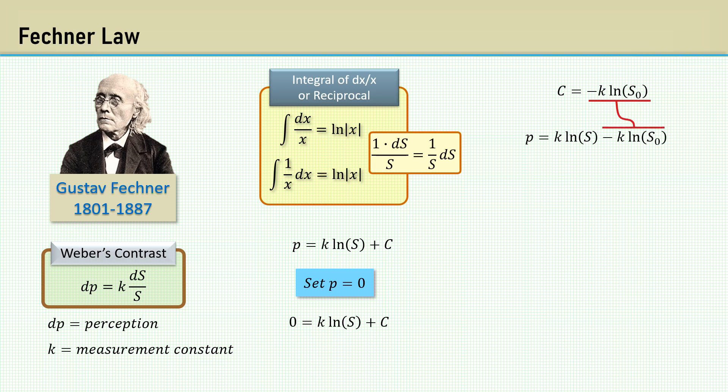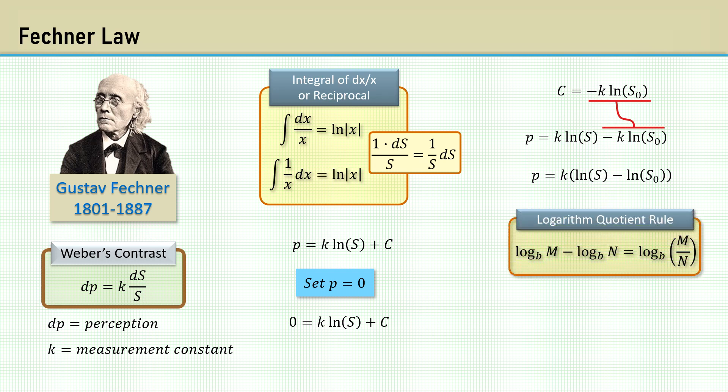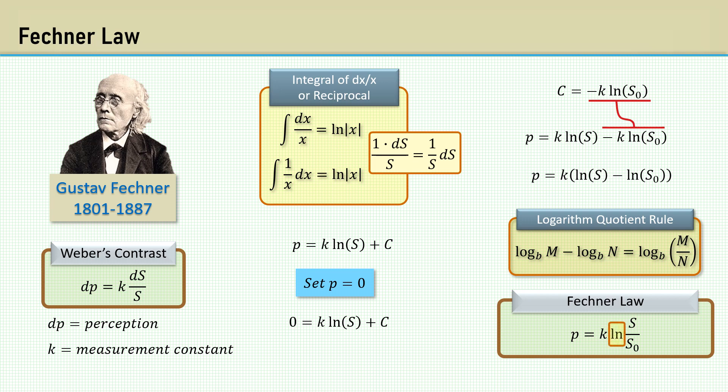We will set P equal to 0 as the minimum perception and rearrange to solve for C and make the associated stimulus S sub 0 being the minimum detectable stimulus. Then put C back into the equation. Now we have the difference between the log of two numbers. We can apply the logarithm quotient rule and voila, Fechner's law is derived. The key is that the perception is a natural logarithmic function of the ratio of a perceived stimulus over a minimum detectable stimulus. Being based on Weber's law, it fails at low intensities and fails at high intensities. It's basically a rule of thumb.